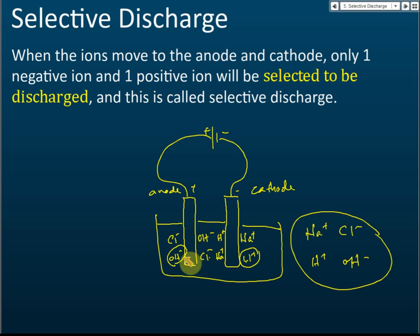How do we know which ion will be selected? That will be discussed in the next slide. For now, just remember: if there is more than one type of ion moving to an electrode, only one type will be selected to be discharged, and this is called selective discharge.